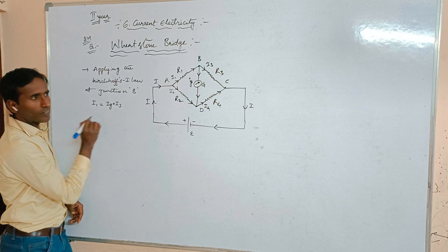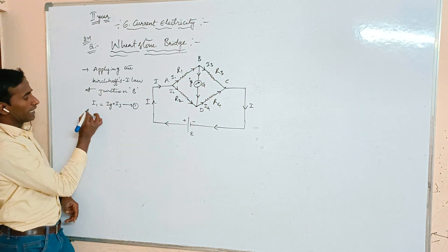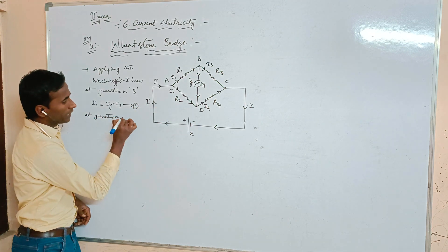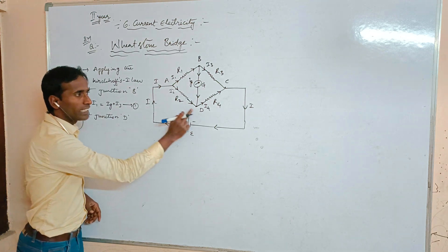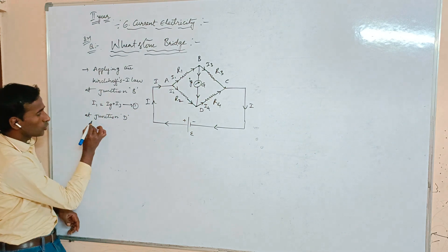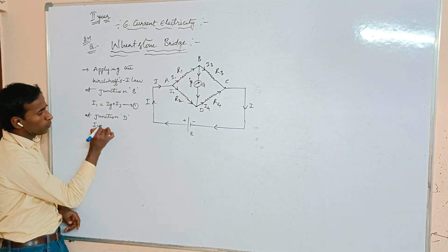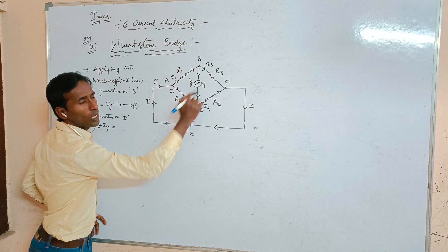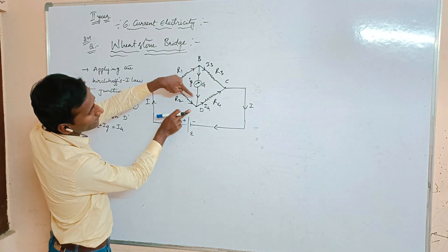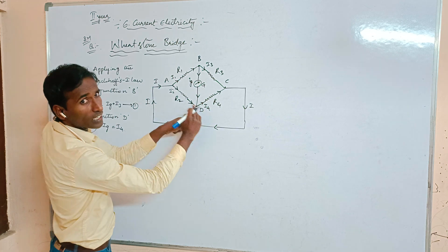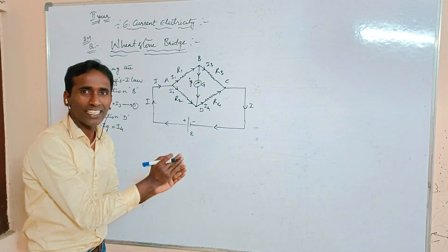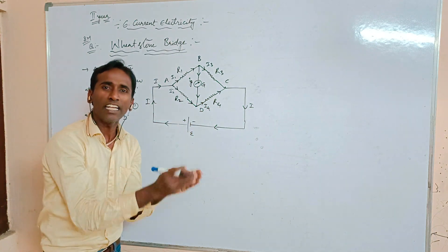Similarly, at junction D: currents I2 and IG both meet at junction D, while current I4 passes away from the junction. So we write: I2 + IG = I4. Kirchhoff's first law states the sum of currents towards the junction equals the sum of currents away from the junction. This is equation number 2.